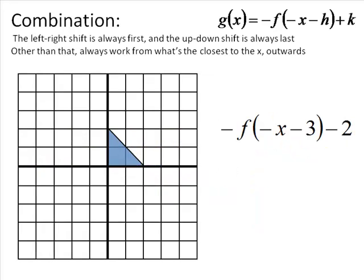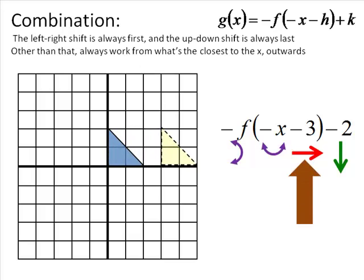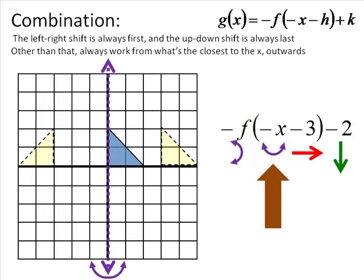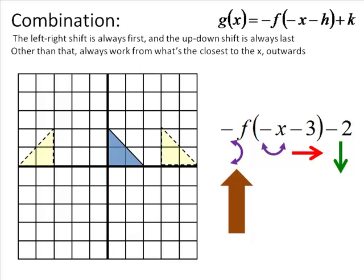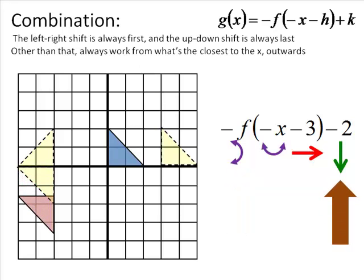Here's one with everything in it. Inside the parentheses we have a shift of negative 3 — that's left-right, and negative 3 means we go to the right. Then we have an inside left-right flip. Then an outside up-down flip. And finally the minus 2 outside is an up-down shift — since it's minus, we go down. So: shift right 3, left-right flip, up-down flip, shift down 2. That's about as exciting as it gets for four transformations.